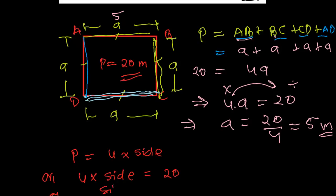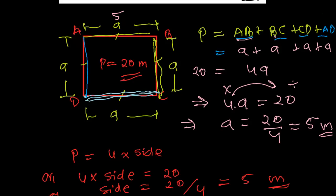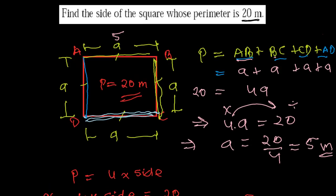Therefore, the side equals 20 ÷ 4 = 5 meters. The side of this square is 5 meters. It's quite an easy problem. You will get many similar types of problems — sometimes you may also be asked about a rectangle.